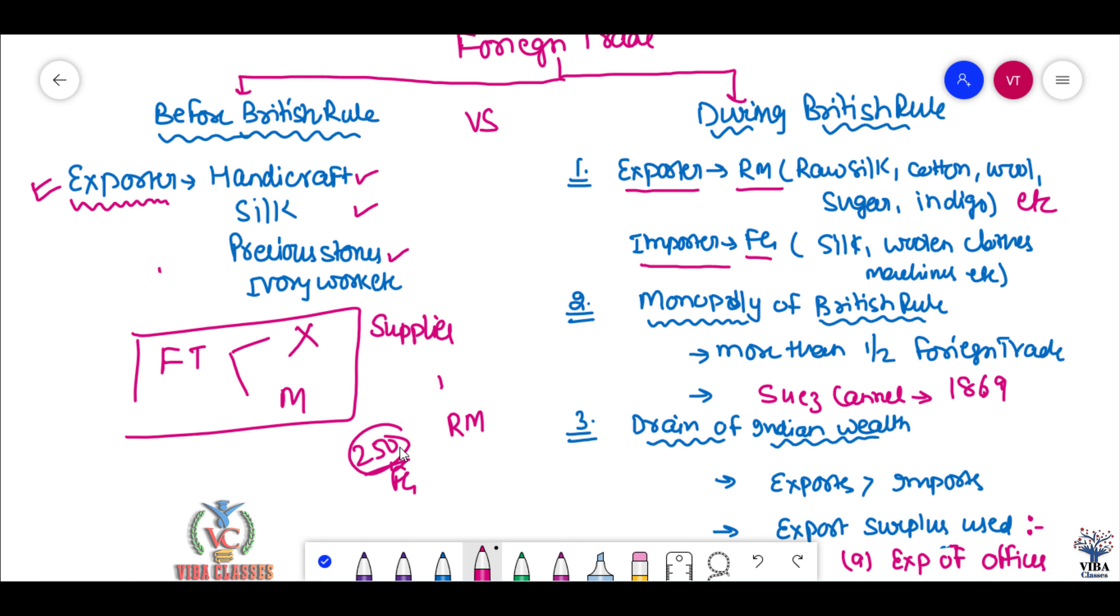If you compare raw materials with finished goods, then there will be a lot of difference. What did they do with us? They exported raw materials like raw silk, cotton, wool, sugar, indigo, which are used in the market. Indigo is something that is used for dyeing and coloring cloths. Our farmers also had to focus on these things.